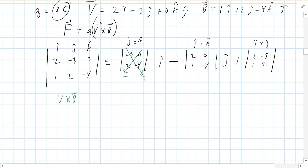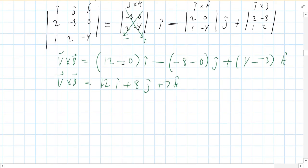So V cross B is, so our first term would be negative 3 times negative 4 is 12 minus 2 times 0 is 0. And then minus. And then we do 2 times negative 4 is negative 8 minus 1 times 0. So that's 0. And that's j hat. And then plus. And then 2 times 2 is 4. And then minus 1 times negative 3 is negative 3. And that's k hat. So our V cross B is 12 i hat plus 8 j hat plus 7 k hat.